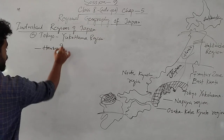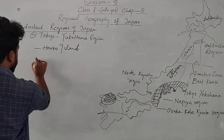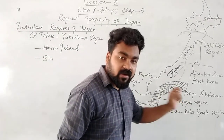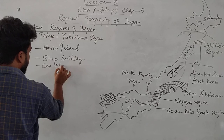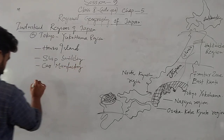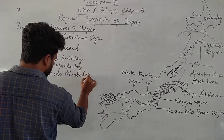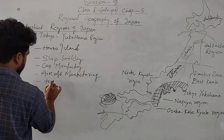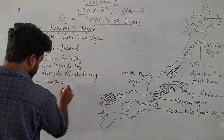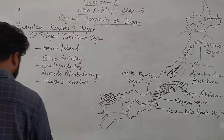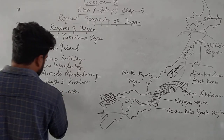In the Tokyo-Yokohama region, 80% of the population is engaged in secondary activities. It includes most of the Honshu island — the largest island in Japan. Being in the coastal area, it is well developed in city building, car manufacturing, aircraft manufacturing, and textiles.